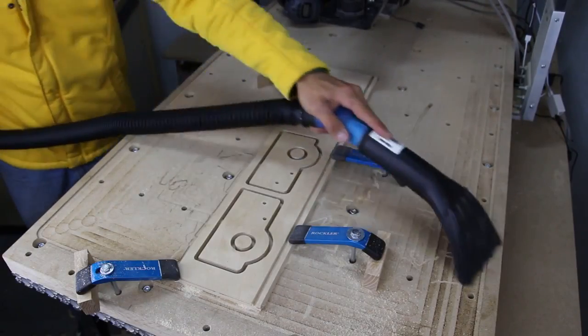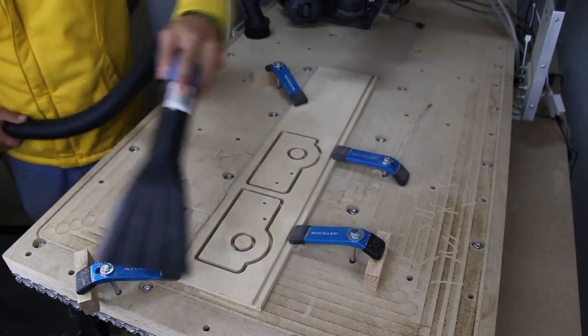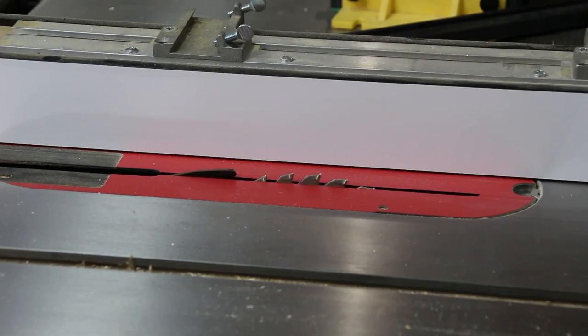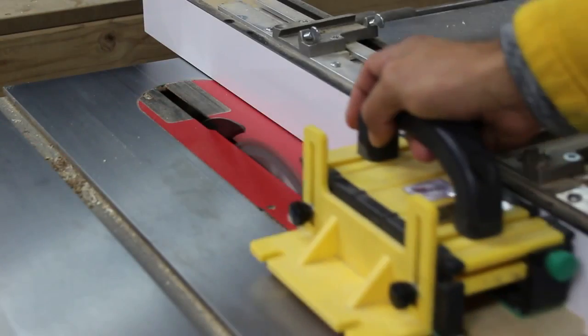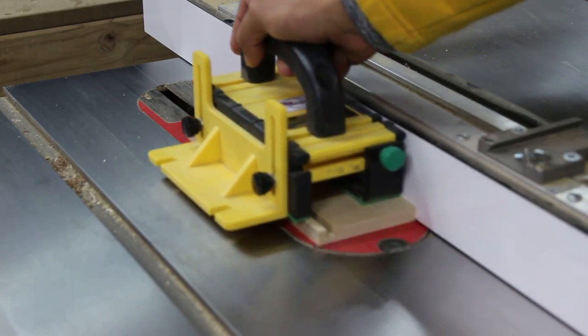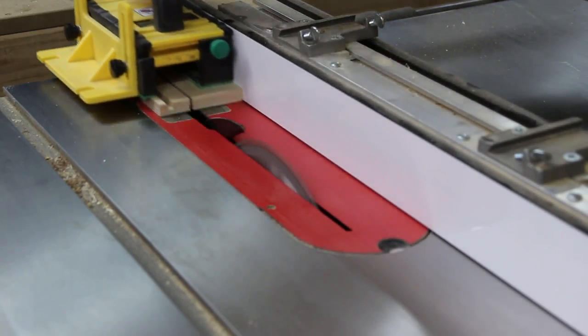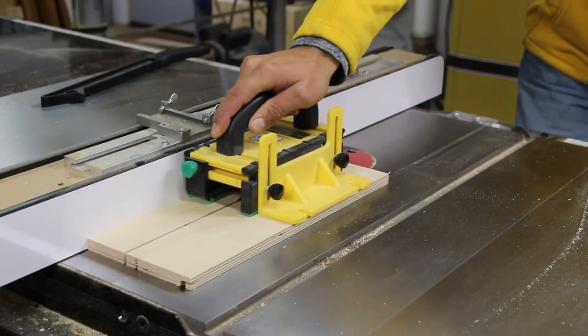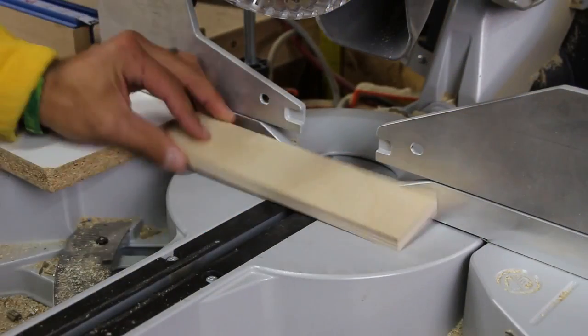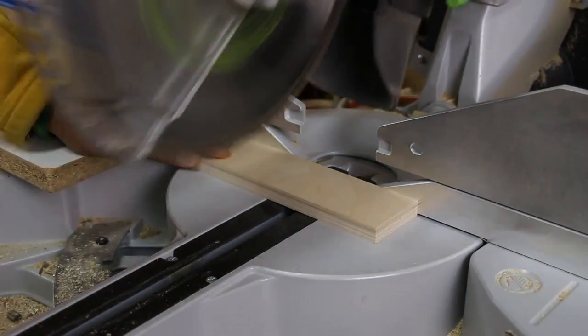When the program was complete, I used my shop vac to clean up the work area and the parts. Now it is time to work on the parts that will connect the sides. Then I head to the miter saw to cut them to the appropriate length.